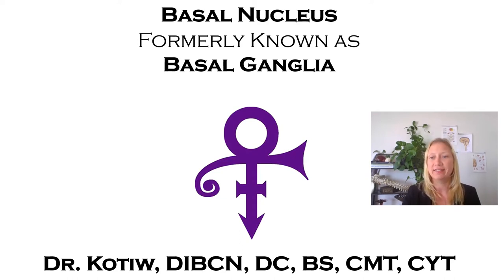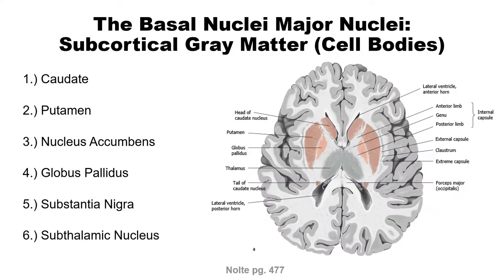The basal nuclei — major nuclei, according to Nolte on page 477 — are the caudate, putamen, nucleus accumbens, globus pallidus, substantia nigra, and subthalamic nucleus. In the picture to the right you won't see the substantia nigra or the subthalamic nucleus; there are other pictures later in the PowerPoint for those. These are numbered so we can keep track of them.